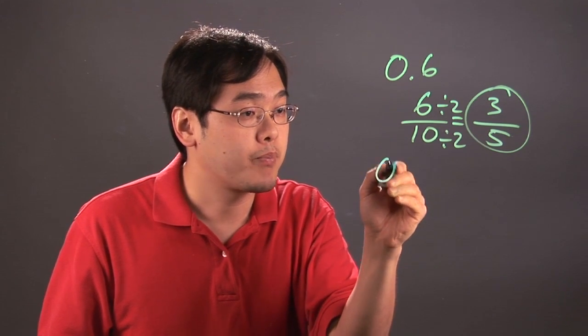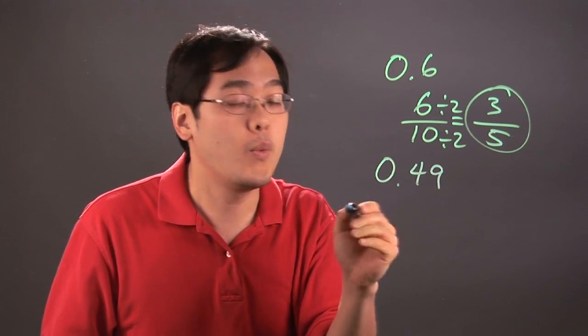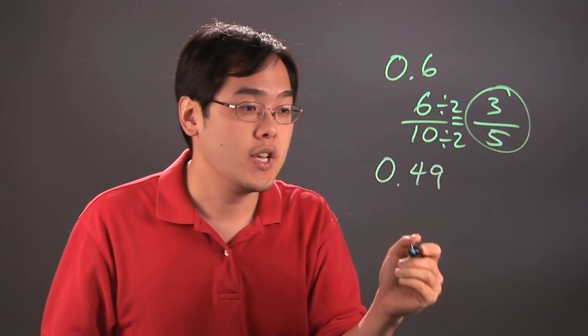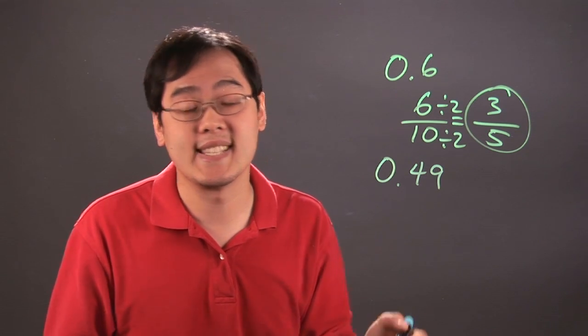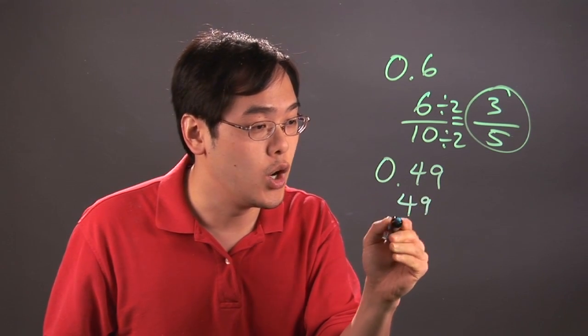Now if you have 0.49, the way that's read is 49 hundredths. So 49 hundredths is written as it sounds, 49 over 100.